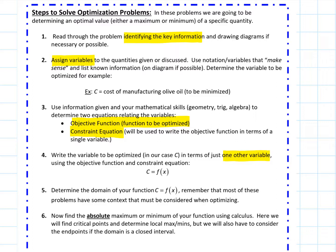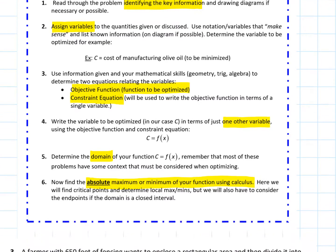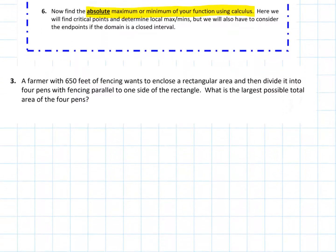So once we've done that, we can consider the domain of that function, consider the context as well as the actual function we've created when looking at the domain, because often context will give us some restrictions as well. And then we find the absolute maximum or minimum using calculus. And so that's where we're going to head into all of the calculus techniques that we've utilized to find maxes and mins. So that's our process. And let's look at an example.